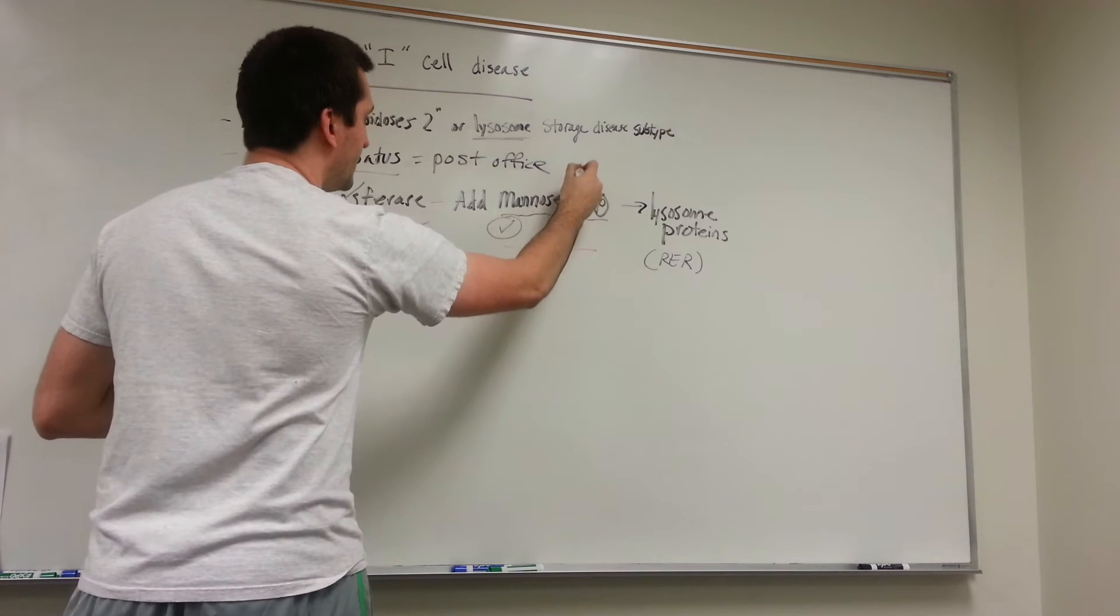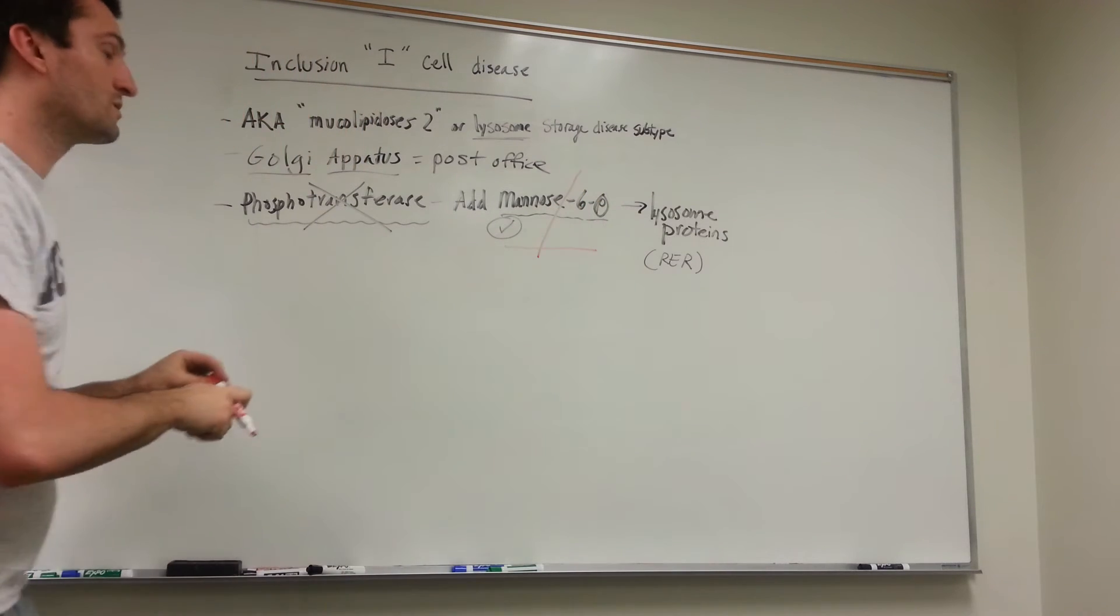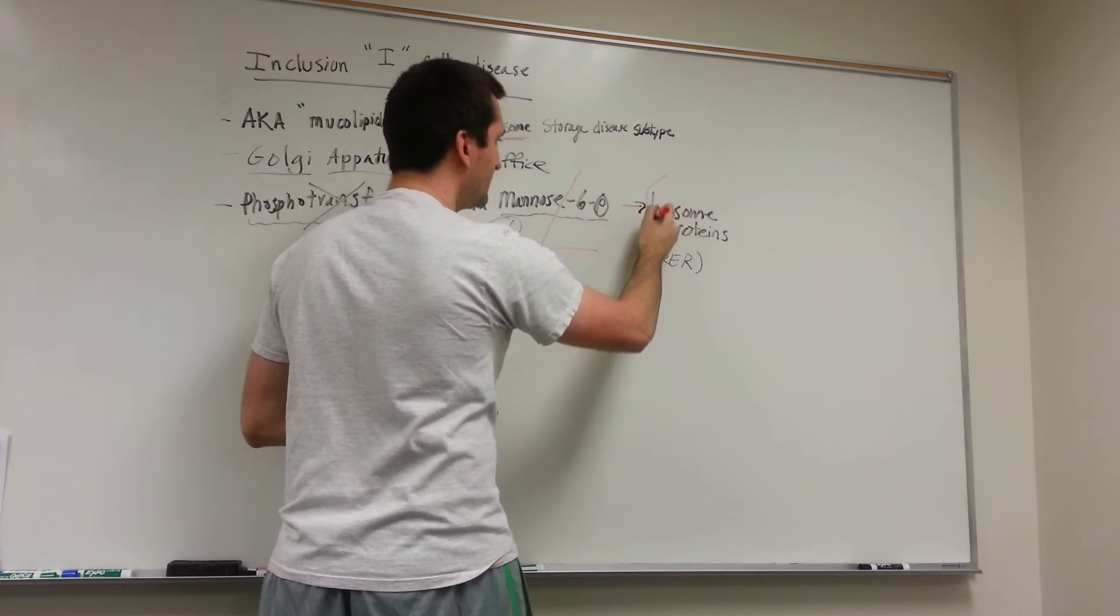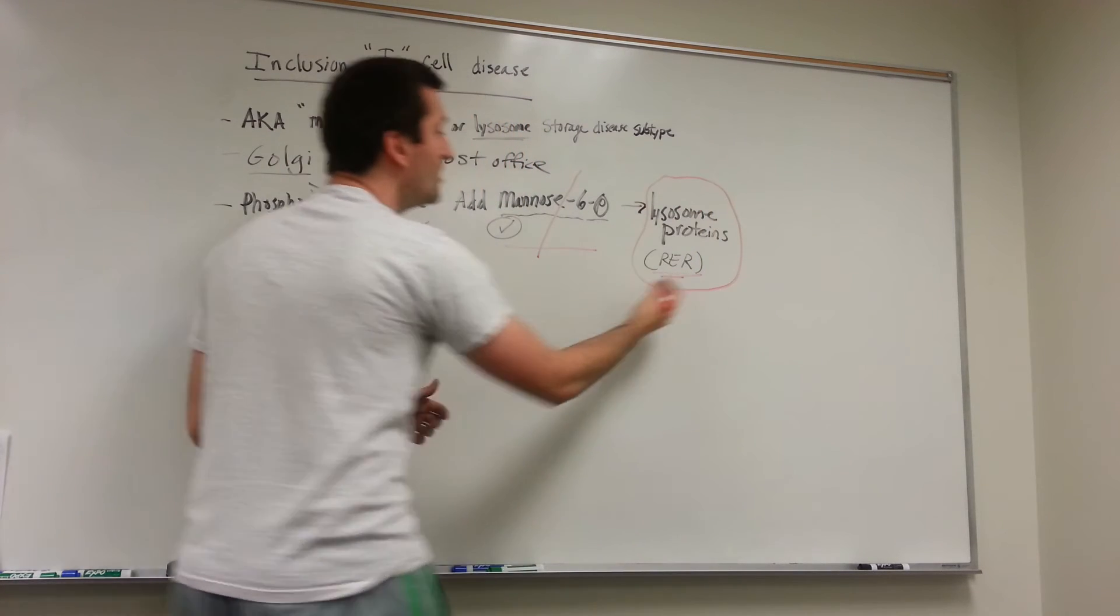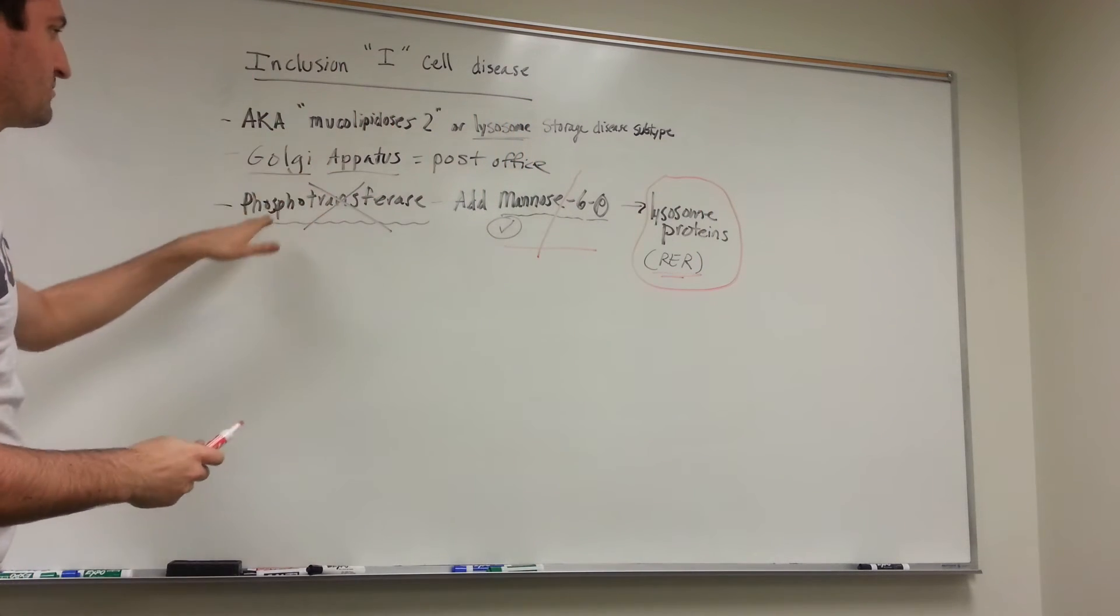What that does is we no longer have mannose 6-phosphate attached to these proteins. We're still making the proteins, so the rough ER isn't the problem. We have a Golgi apparatus problem where we lose this phosphotransferase activity.